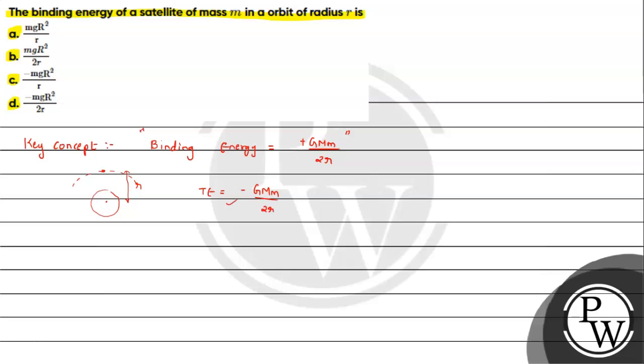Now, the negative sign indicates that the satellite is bound to the Earth's surface. If we give it as much energy, if we give it as positive, it will escape from the Earth's gravitational influence. So that is what the binding energy is.